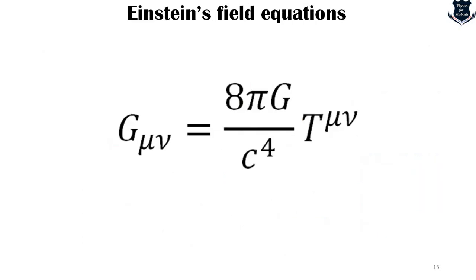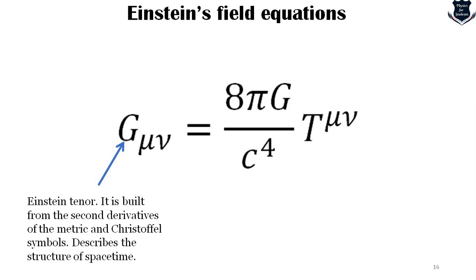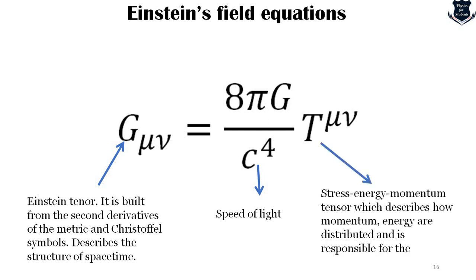The Einstein tensor G, built from second derivatives of the metric and Christoffel symbols, describes the structure of space-time. The T_μν, the stress-energy-momentum tensor, describes how energy is distributed. The constants 8, π, and Newton's G appear here. Einstein's field equations describe how things such as energy, momentum, pressure, and shear stress cause the curvature of space-time.